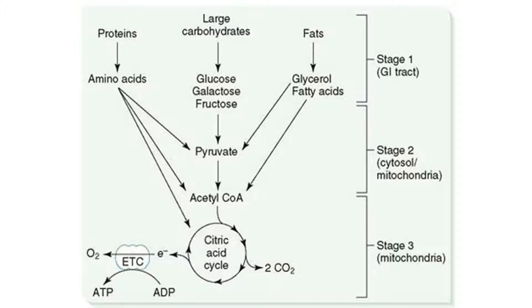Here we see a scheme of the degradation of main nutrients — proteins, carbohydrates, and fats. These main nutrients degrade by three stages. Stage 1 is the gastrointestinal tract. Stage 2 is the cytosol. Stage 3 takes place in mitochondria. In stage 1, in the gastrointestinal tract, the main nutrients degrade to monomers.